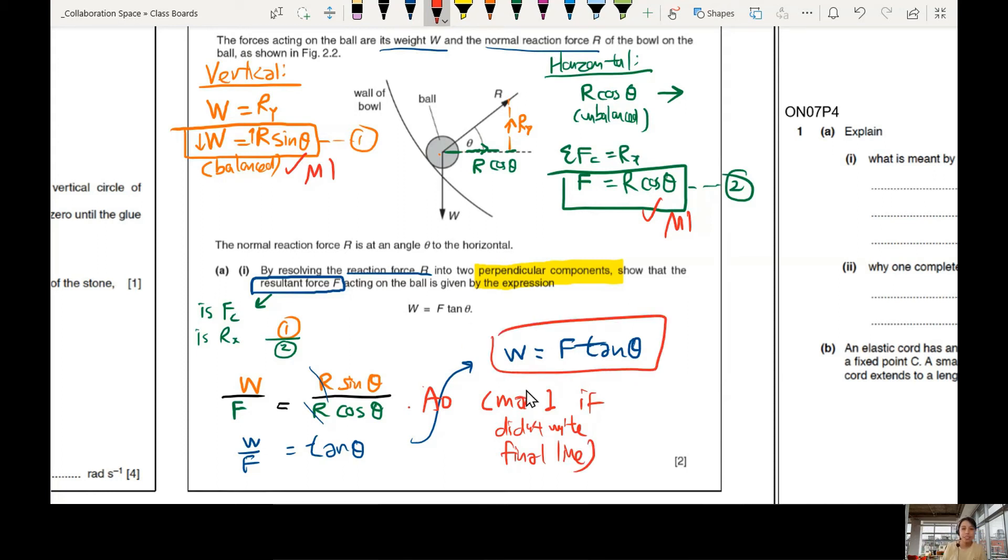Okay, so remember, you see tangent. Means got horizontal, got vertical, divide. Horizontal, vertical, divide. But this question is very rare. This type of circular motion question. Once in a very long while it comes up.